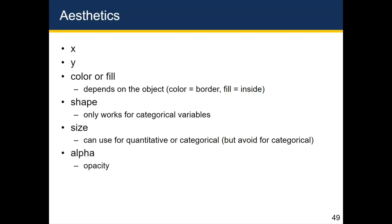Alpha refers to opacity such that an alpha of one is completely opaque and an alpha of zero is completely invisible. And alpha is typically not mapped to a variable, although you can, because basically you'll end up hiding some of the points. But alpha is often fixed at a lower number than one. One is the default.